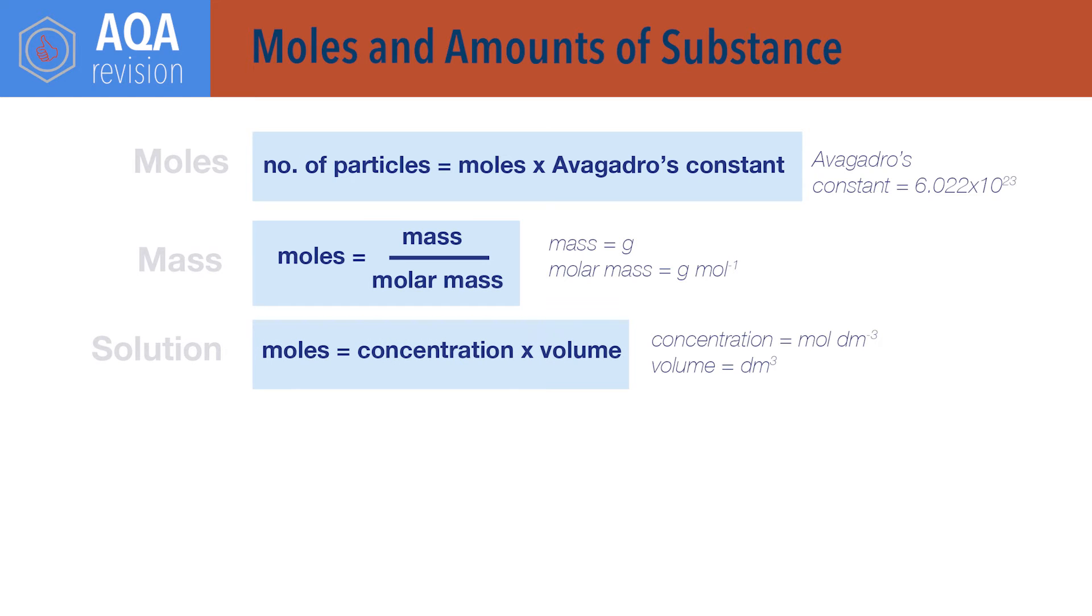Moles equals concentration times volume. Note that the units for concentration are usually moles per decimetre cubed and volume therefore should also be in decimetres cubed. To convert the more common volume unit of centimetres cubed to decimetres cubed, divide by 1000.